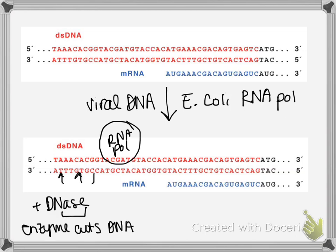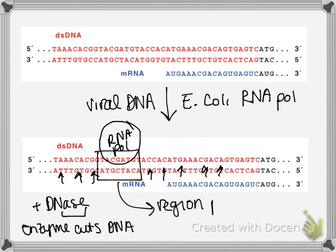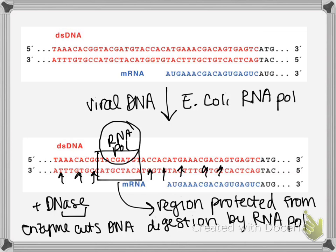DNase is the enzyme that cuts DNA. Basically, it will cut DNA anywhere that it can see, illustrated here by all these arrows. But the place where there is protein bound — in this case RNA polymerase — will be blocked from DNA digestion, and this region will be protected. So the only piece of DNA that will really be left is the part that is underneath the RNA polymerase.